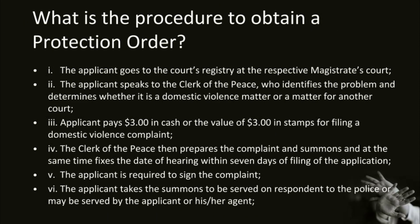What is the procedure to obtain a Protection Order? 1. The applicant goes to the court's registry at the respective magistrate's court. 2. The applicant speaks to the clerk of the peace, who identifies the problem and determines whether it is a domestic violence matter or a matter for another court. 3. The applicant then pays 3 TT dollars in cash or the value of 3 TT dollars in stamps for filing a domestic violence complaint.